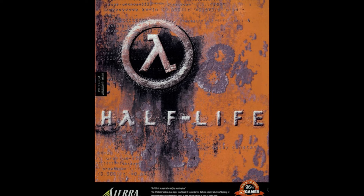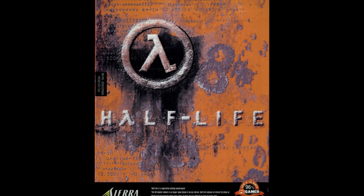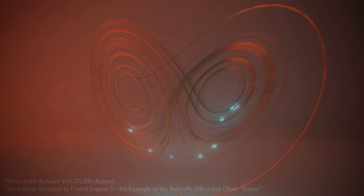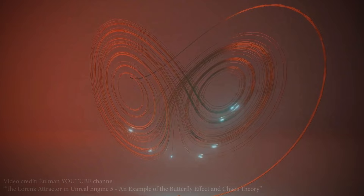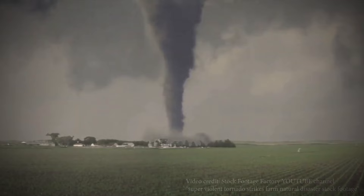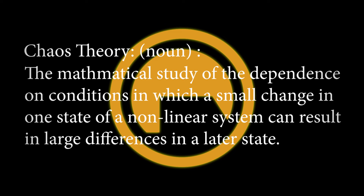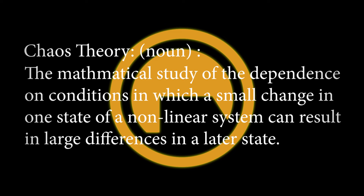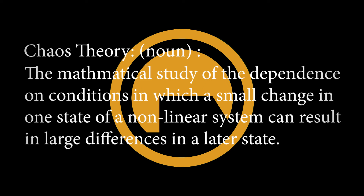From development to delivery. Chaos is the one very key element in how the entire saga of the Black Mesa incident unfolds, also known as the butterfly effect. If a butterfly flaps its wings in Brazil, does it set off a tornado in Texas? The chaos theory or butterfly effect can simply be defined as the dependence on conditions in which a small change in one state of a non-linear system can result in large differences in a later state. This is an exploration of the intricate dance with chaos theory within Half-Life.